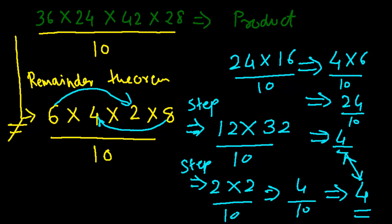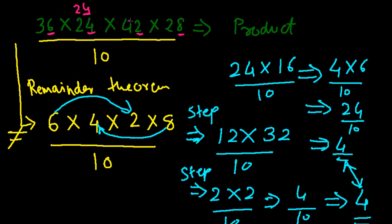Now, how can you apply this in an even easier manner? You don't need to write the division by 10 every time. Simply think of it this way: don't see them as full numbers — only choose the unit's place. 6 times 4 gives 24, choose 4. 4 times 2 gives 8, choose 8. 8 times 8 gives 64, choose 4. That 4 is our final answer, which is always going to be the unit digit of the entire product.